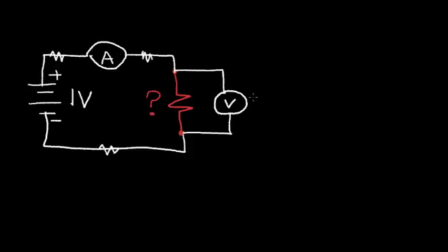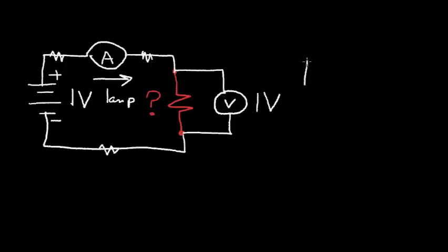Let's presume that I read one volt on my voltmeter — so the parasitics are very small — and I measure one amp of current flow in this resistor. So I can calculate the resistor value by a very simple equation: resistance is equal to the voltage across the resistor divided by the current through the resistor. This is called Ohm's law, and we'll talk more about Ohm's law in the future.